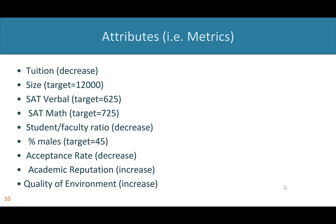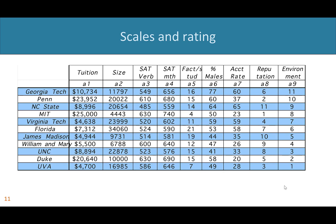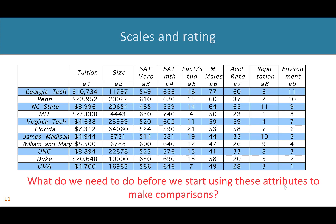So let's imagine these are the attributes or metrics you end up with: tuition as low as possible, the size of a school targeted around 12,000 people, a student-faculty ratio as small as possible, and so on. You go out and collect this data — and warning, this data is quite dated at this point — to compare these different schools.